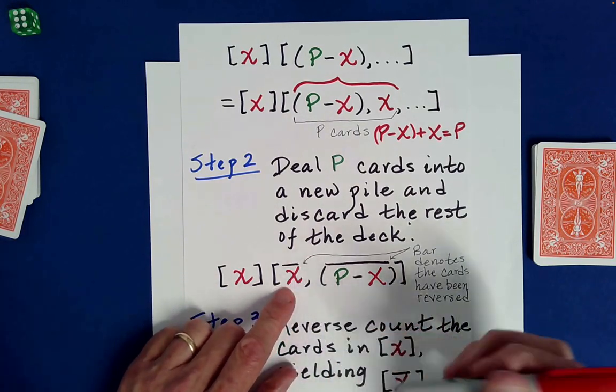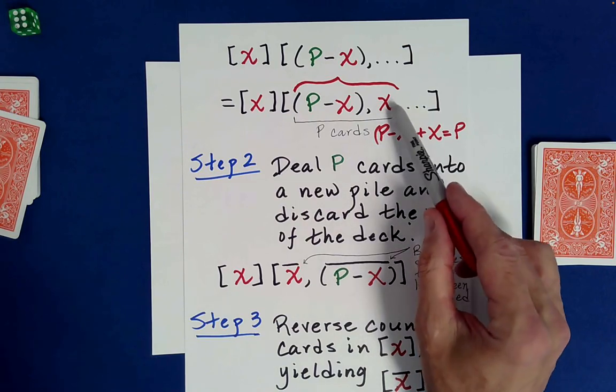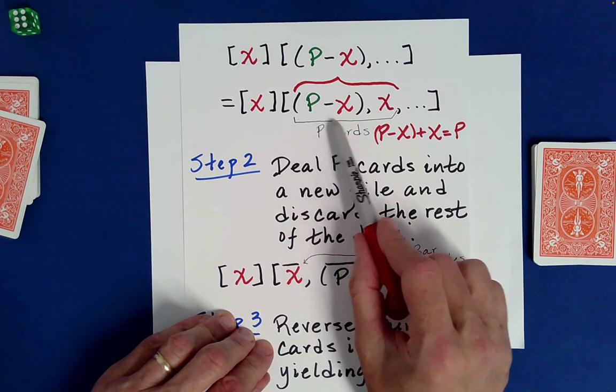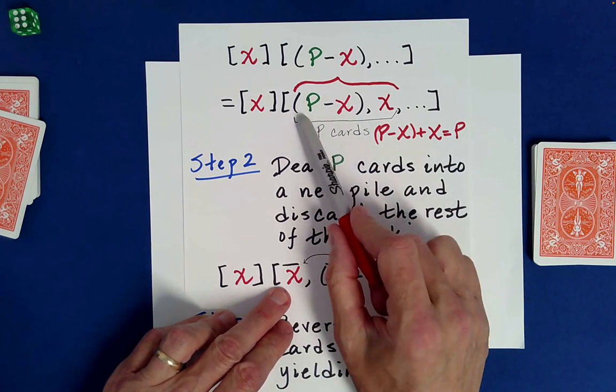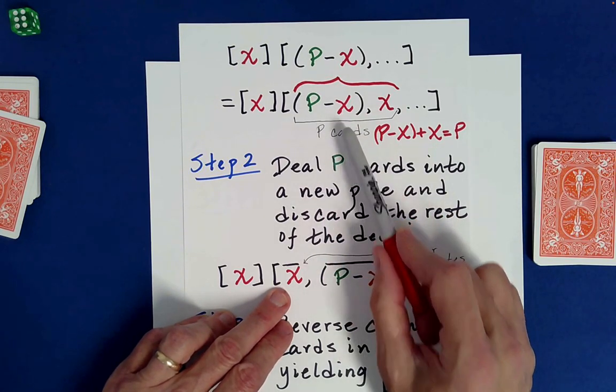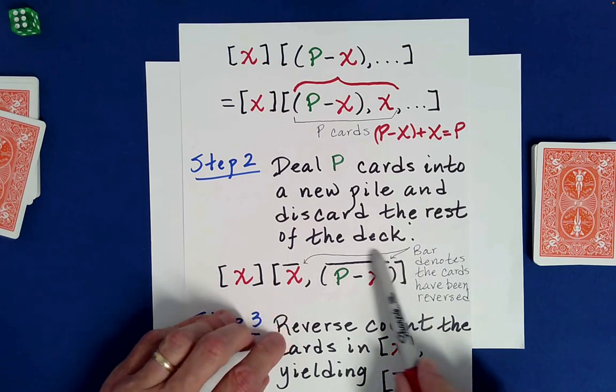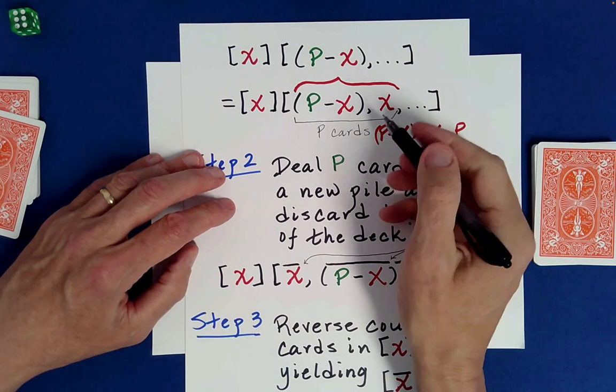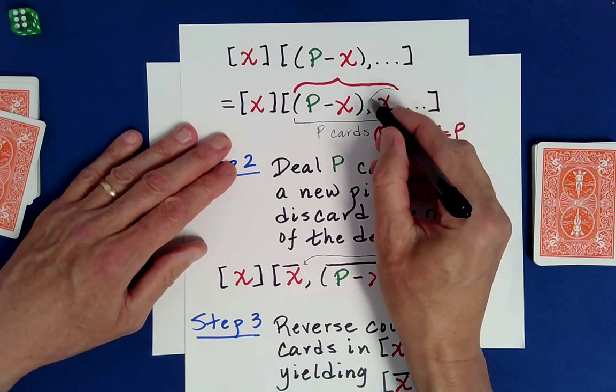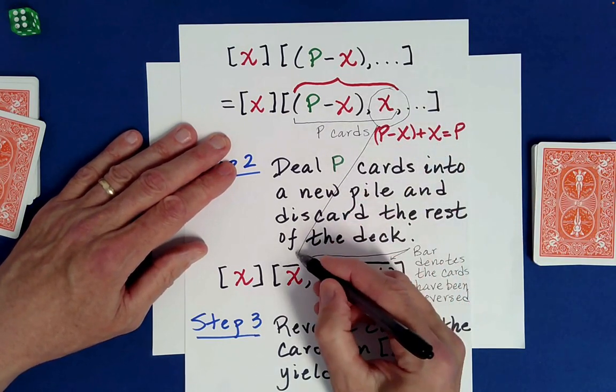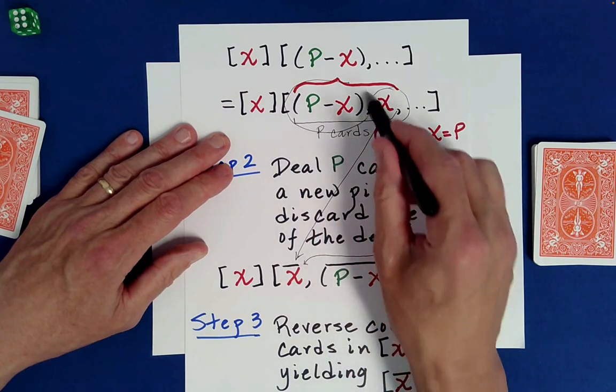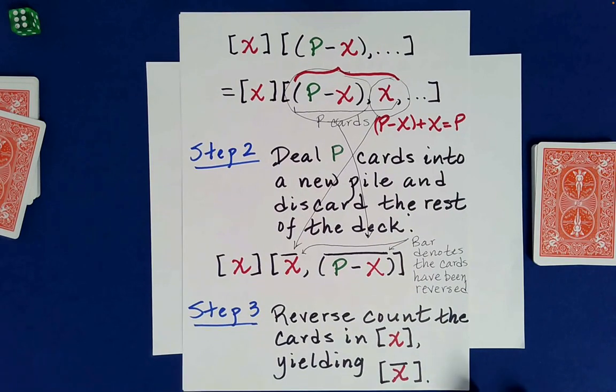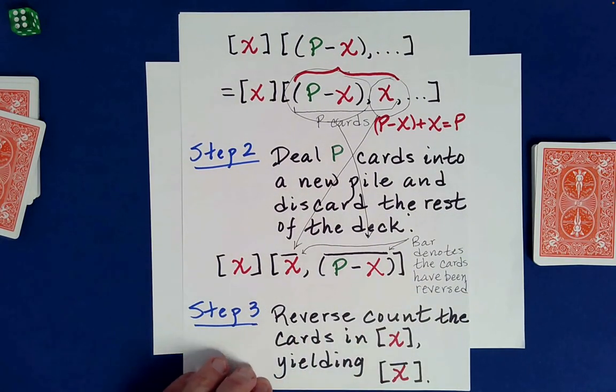Okay. So the cards here are going to be reversed in order as we deal them to the table. Okay. So that's what this bar is here for. The bar is reminding us that certain, these cards have all been reversed from their original order here. So as we deal these out, they're in the reverse order now. Okay. But equally important, notice what happens here. This, these cards here, which were at the bottom of the list of P cards will now be at the top. And the ones that were at the top of that pile will now be at the bottom of this pile of P cards, right?